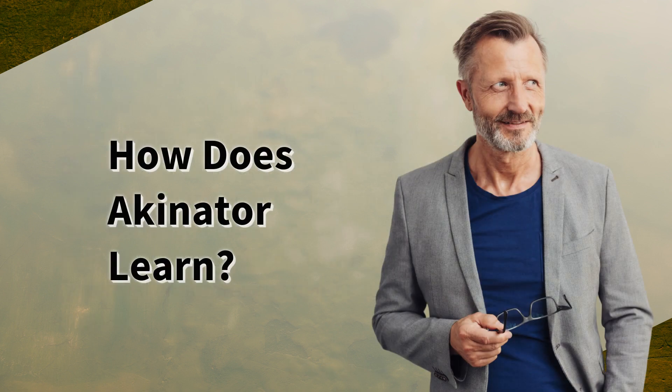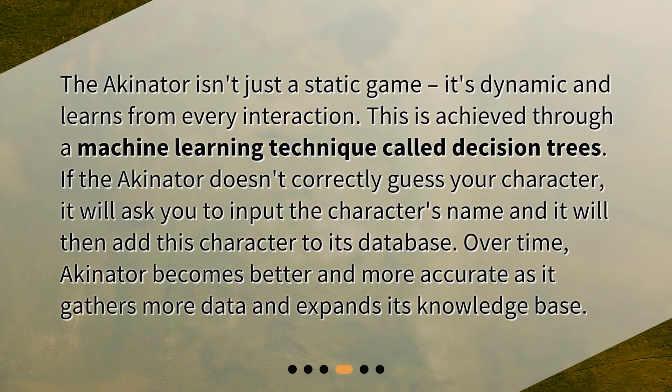How does Akinator learn? The Akinator isn't just a static game — it's dynamic and learns from every interaction. This is achieved through a machine learning technique called decision trees. If the Akinator doesn't correctly guess your character, it will ask you to input the character's name and add this character to its database. Over time, Akinator becomes better and more accurate as it gathers more data and expands its knowledge base.